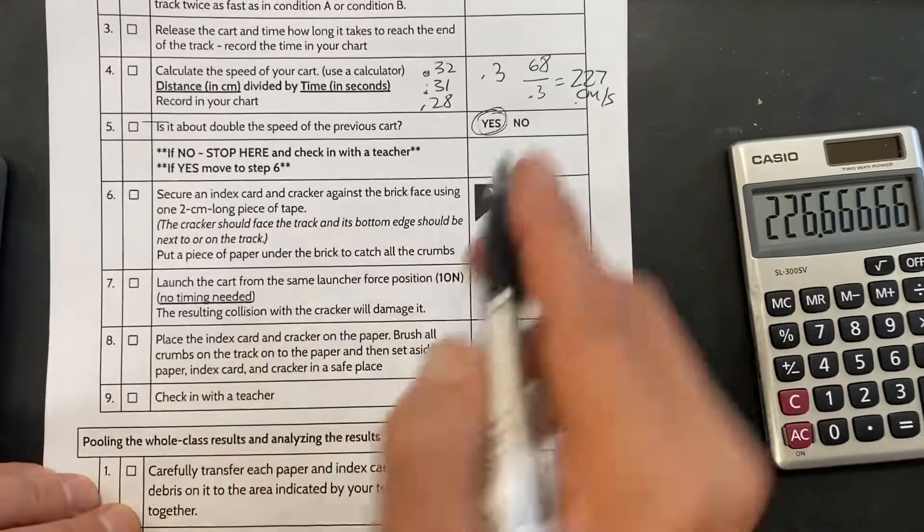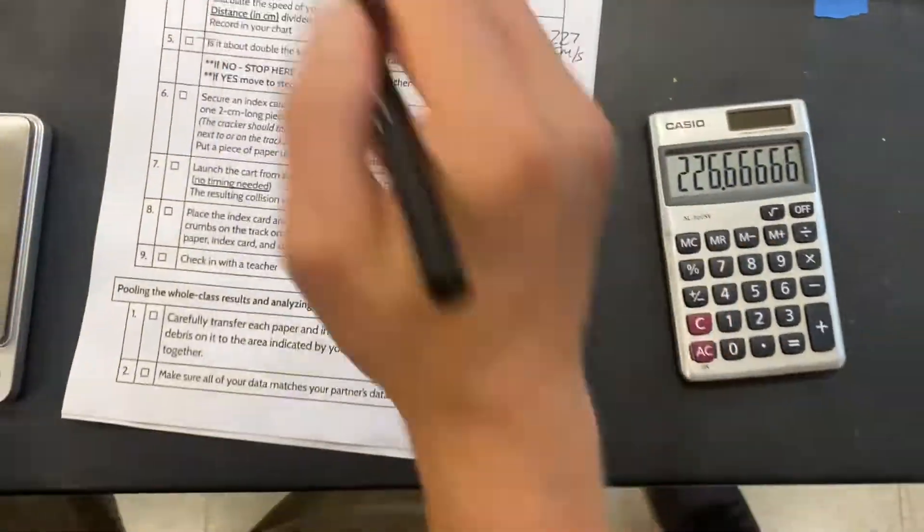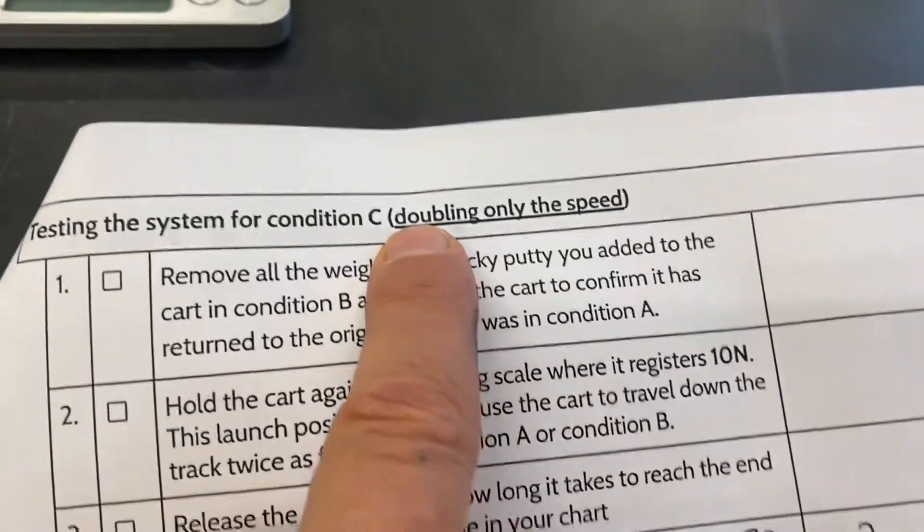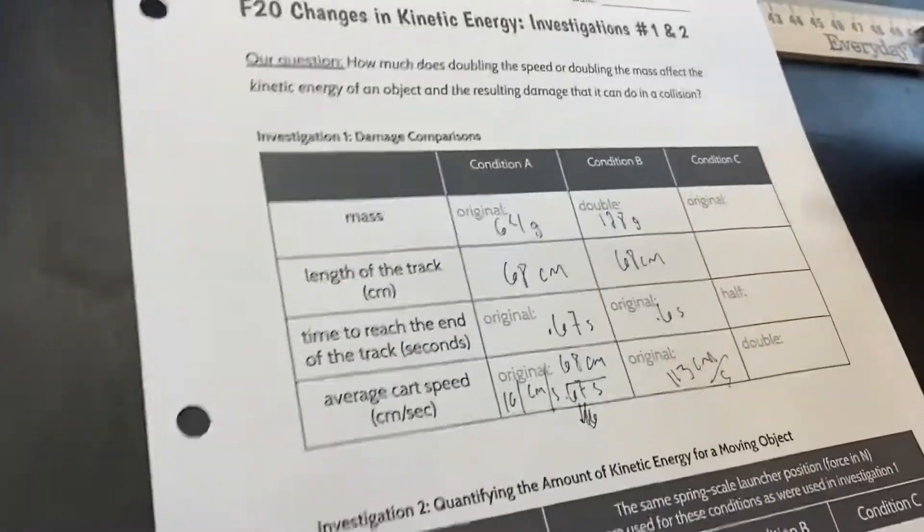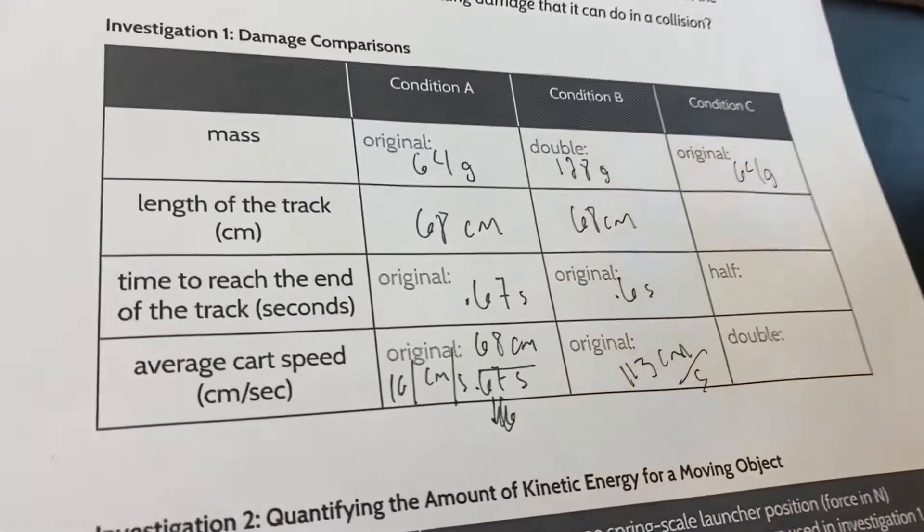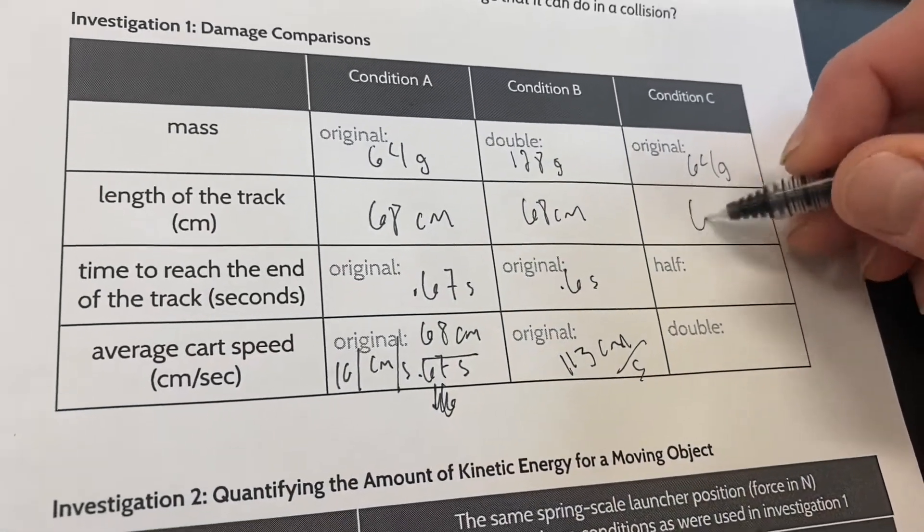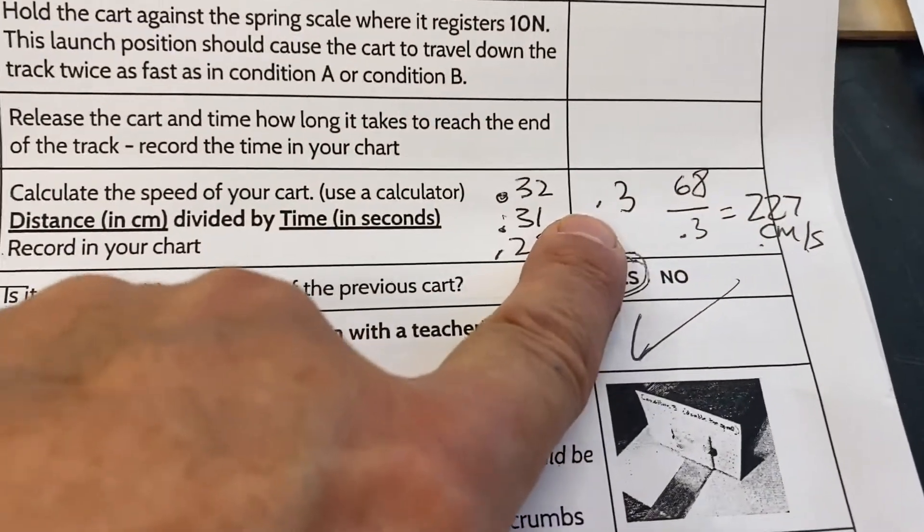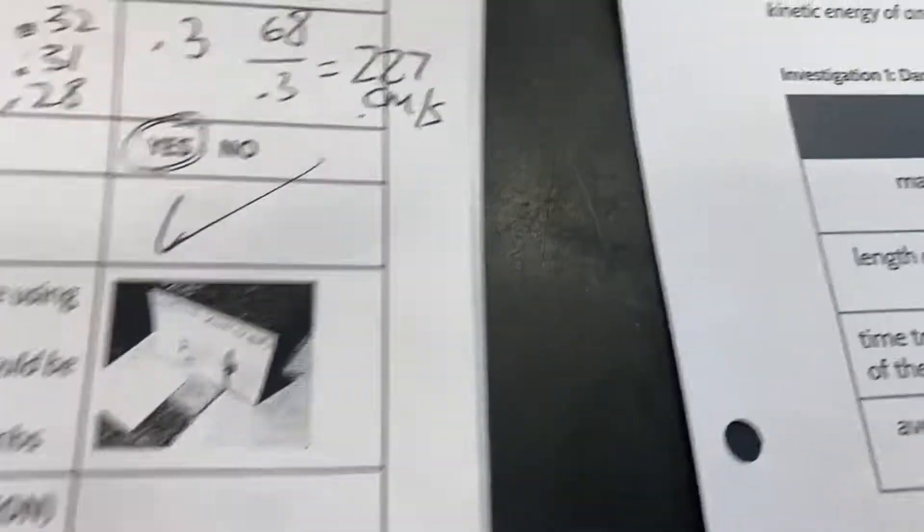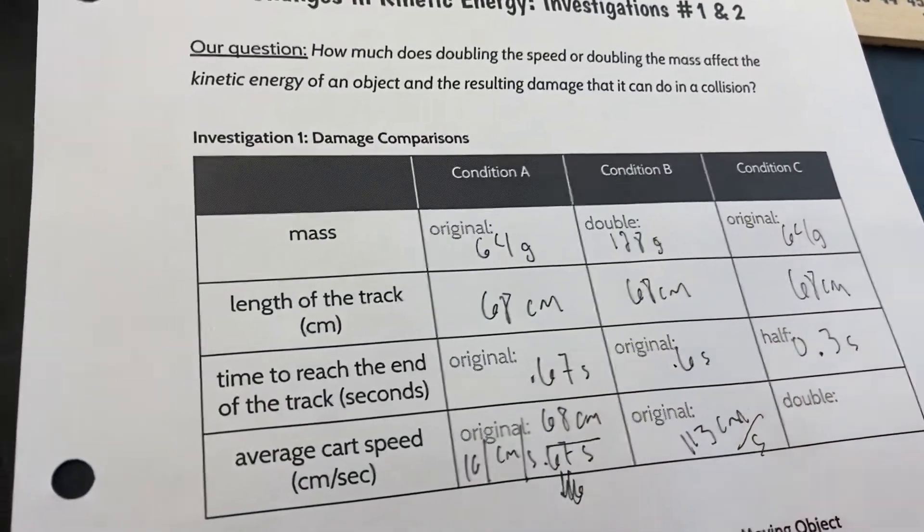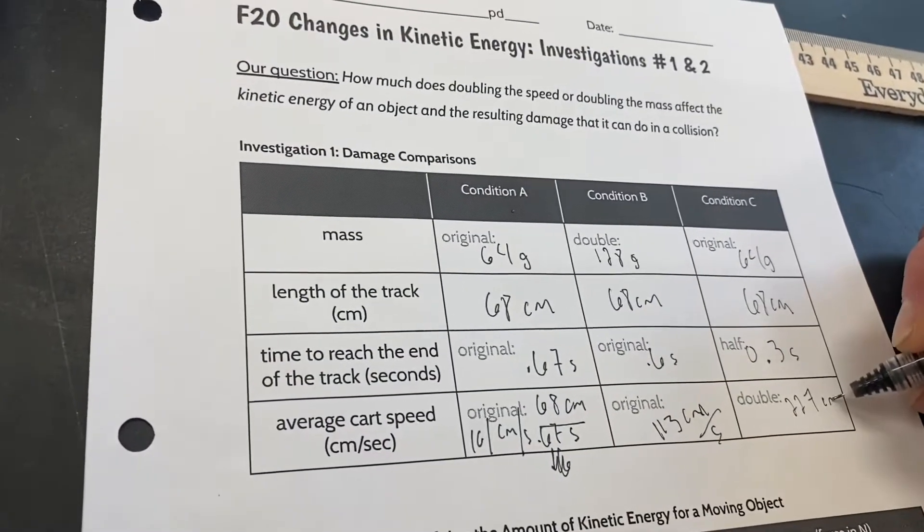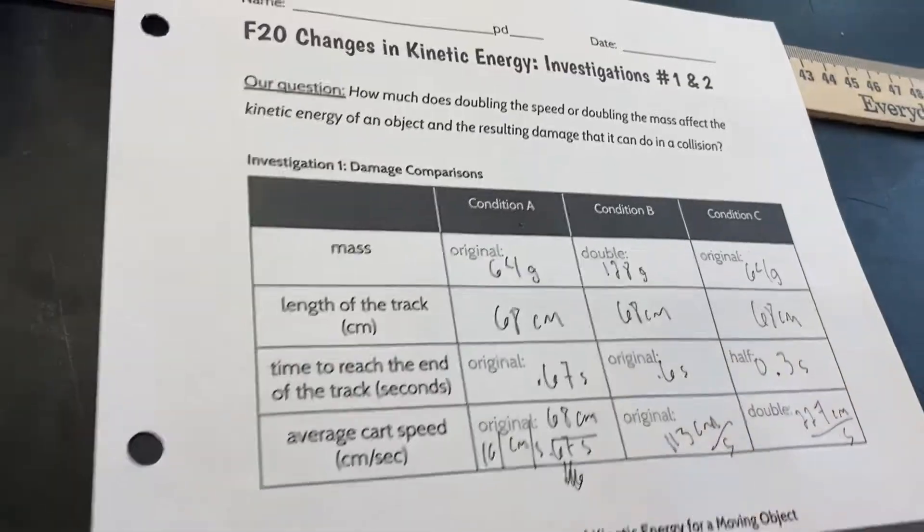If no, stop here and check in with your teacher or if yes, move on. We're done. Good to go. Now we're going to add the numbers we got for our doubling the speed trial in condition C. And we're going back to our original mass. 64 grams. Length of our track is still the same. It's 68 centimeters. Except this time our speed was almost double. What we came up with was 0.3 seconds. So then we calculated that out with our formula, distance over time. And we got 227 centimeters per second.